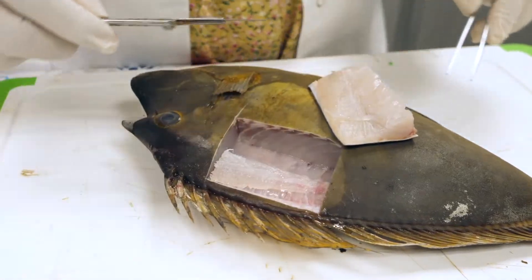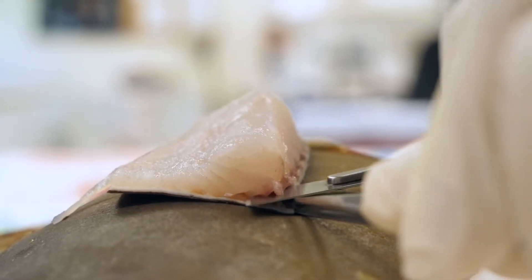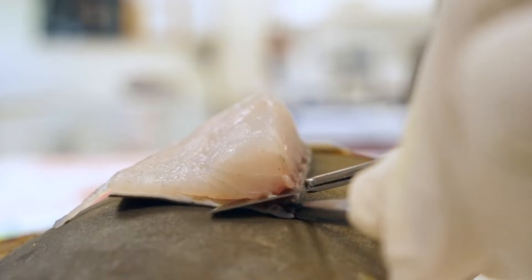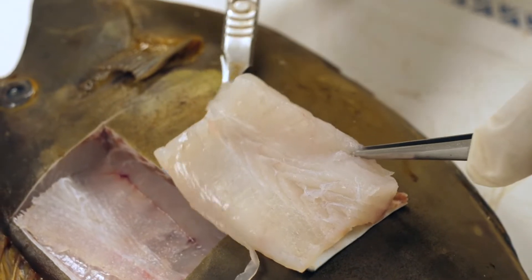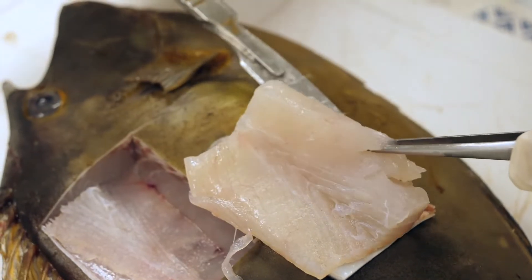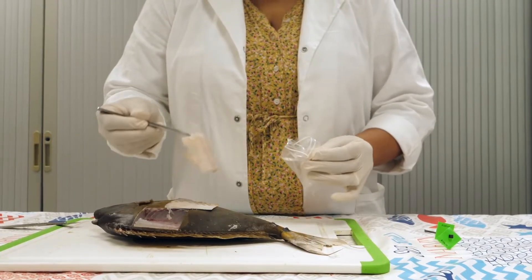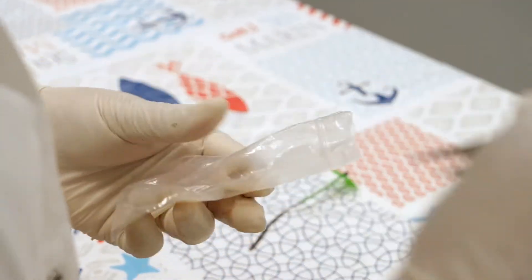You must separate the skin and the scales from the muscle by holding the skin with the tweezers and scraping the skin with the scalpel. Place the piece of muscle in a plastic bag using the tweezers.